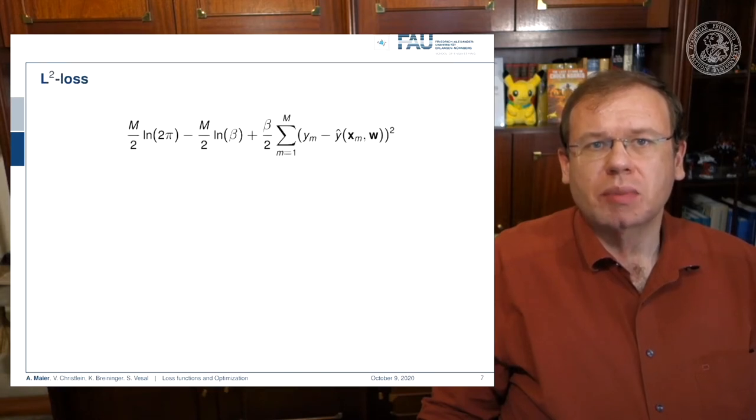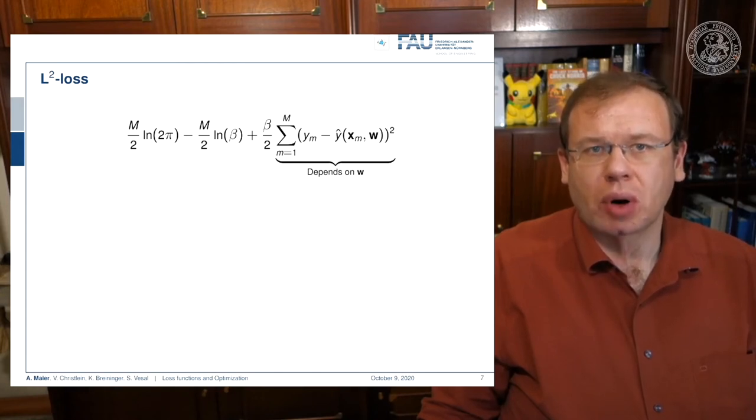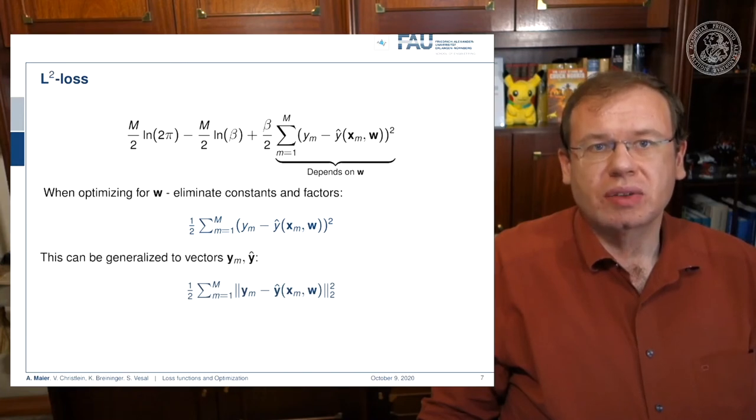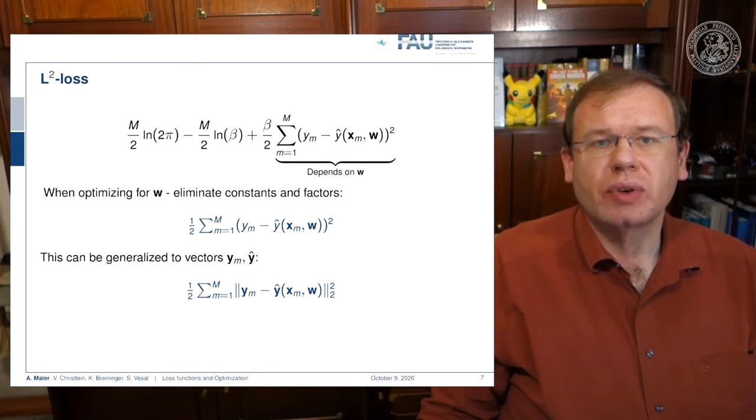Now you can see that only the last part here actually depends on W. Everything else doesn't even contain W. If we seek to optimize towards W, we can simply neglect the first two parts. We end up with only the right part here. On the right hand side, if we now assume beta equals 1, we end up with exactly 1 over 2 the sum over the square root of the differences. This is nothing else than the L2 norm. If you write it in vector notation, you end up with this. Of course, this is equivalent to a multi-dimensional Gaussian distribution with uniform variance.